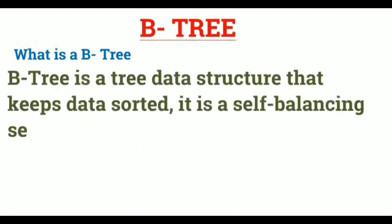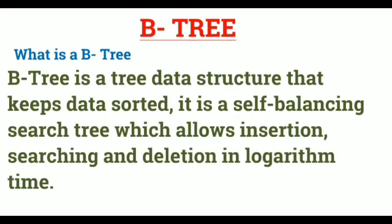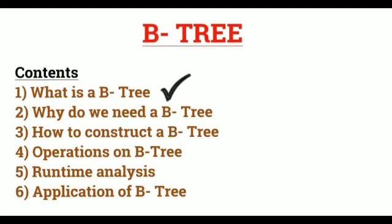B-tree is a tree data structure that keeps data sorted. It is a self-balancing search tree which allows insertion, deletion, and search in logarithmic time. Good, you have taken your first step. Now you know what is a B-tree.